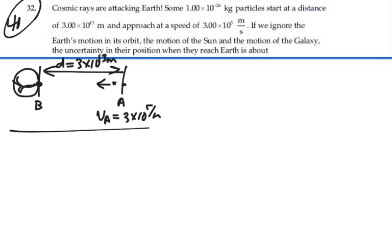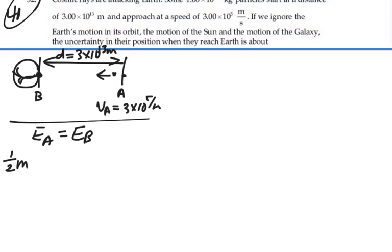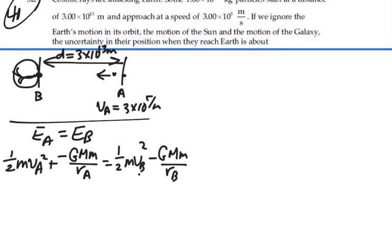So if we say that the total energy at A is equal to the total energy at B. The kinetic energy at A plus the potential energy at A, which would be the gravitational potential energy, negative GMM over radius at A, is equal to the kinetic energy of B plus the potential energy of B. All right. Let's divide through by the mass and solve this for the velocity of B.